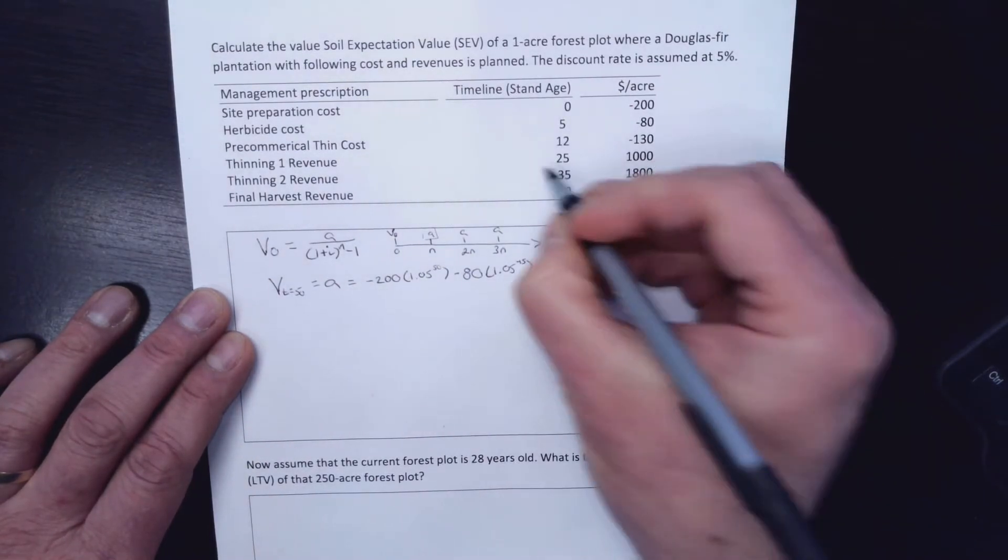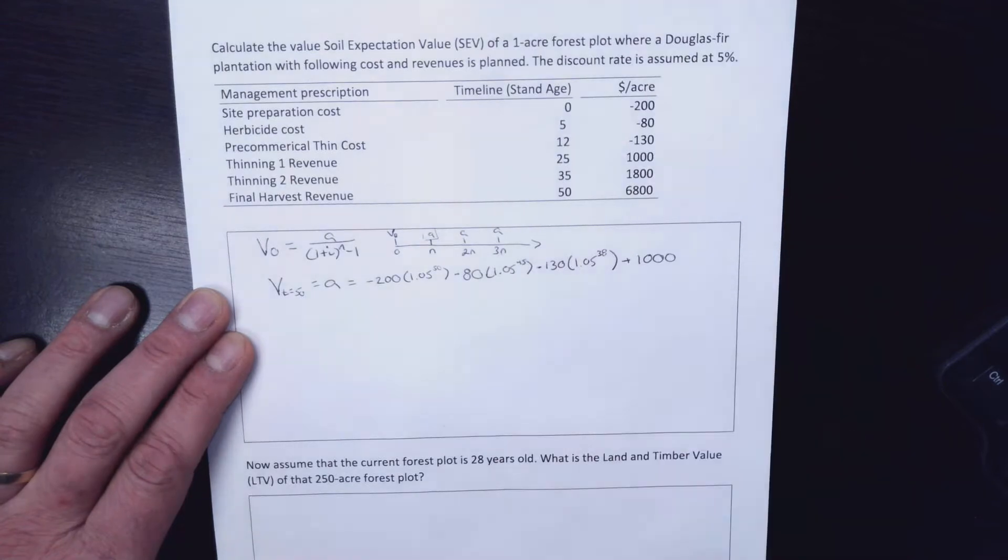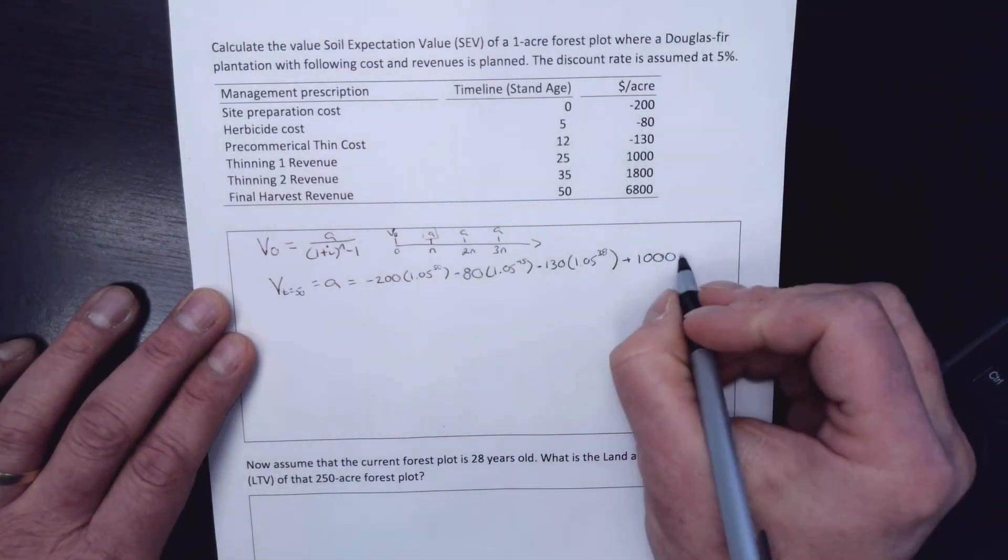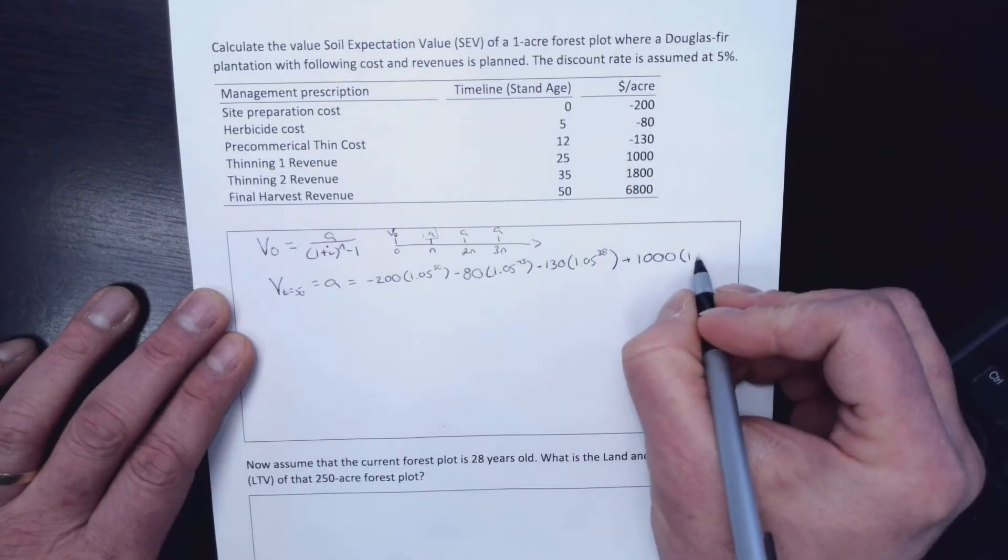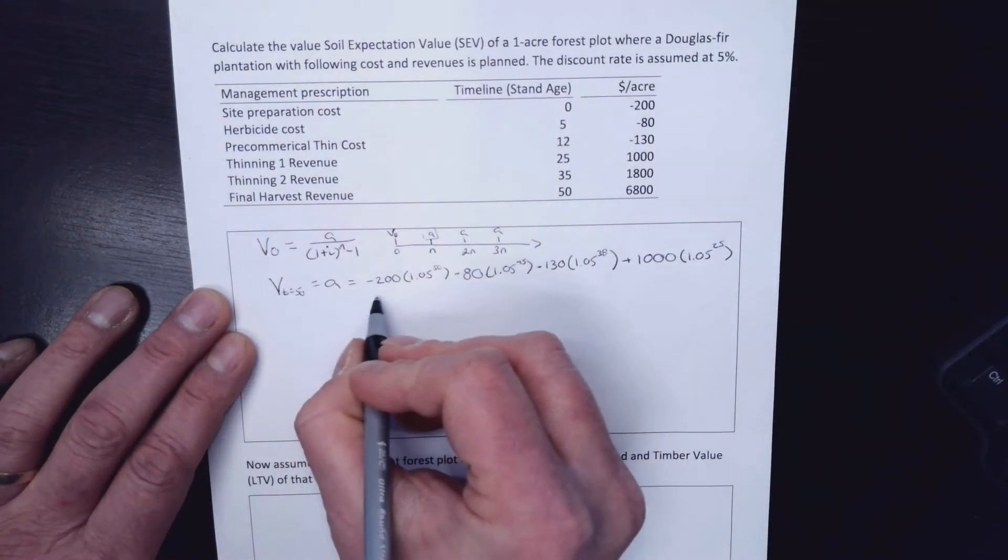I've also got this first thin, so I'm probably going to get some biomass out of there. Maybe I'm sending it to a power plant or something like that. And I'm going to get $1,000 and I can move that forward in time 25 years to get it to the end.